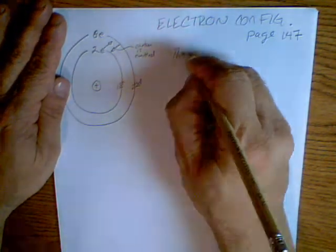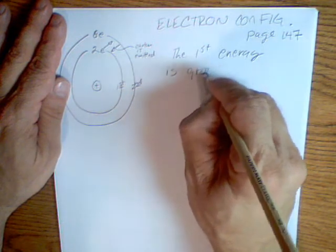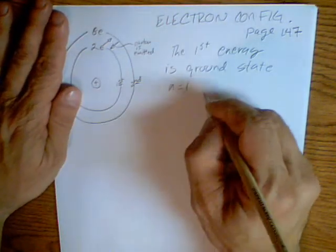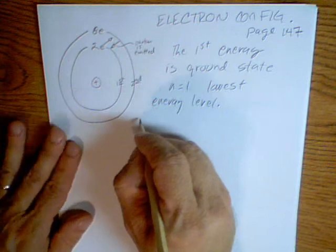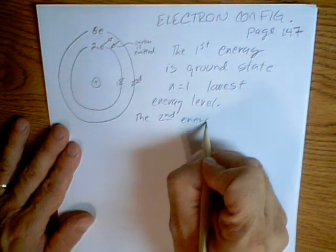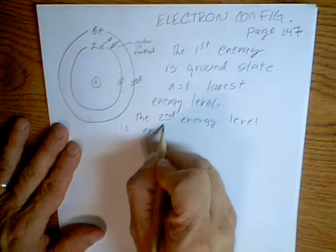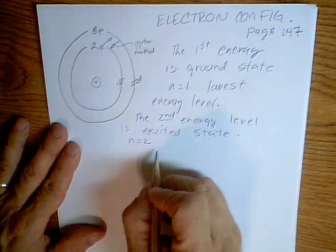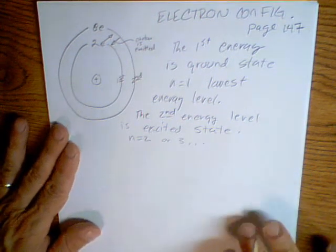The first energy level is what we call ground state. N equals one. And that's the lowest energy level. The second energy level is what is called the excited state. N equals two. Now, it could be N equals three, four. But N equals two or three or four. And so this is a higher energy level.